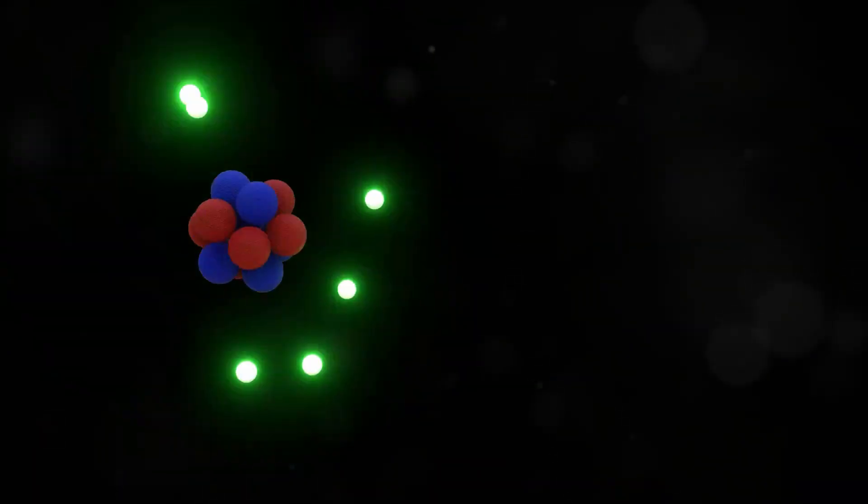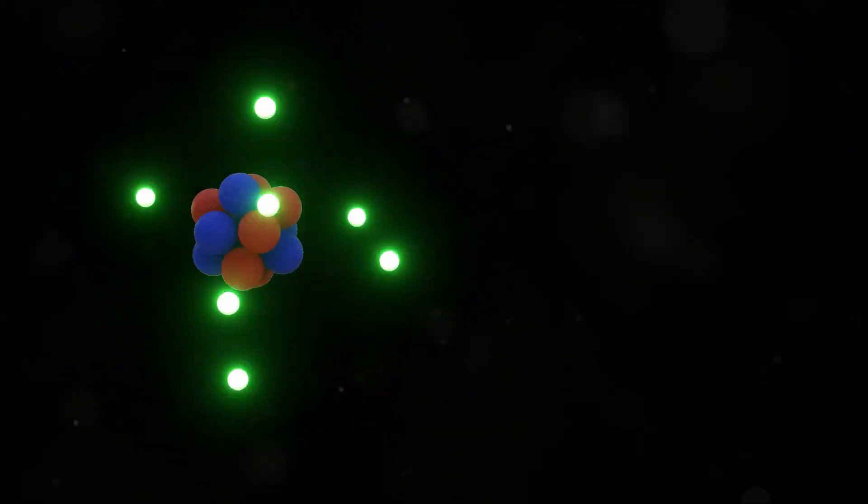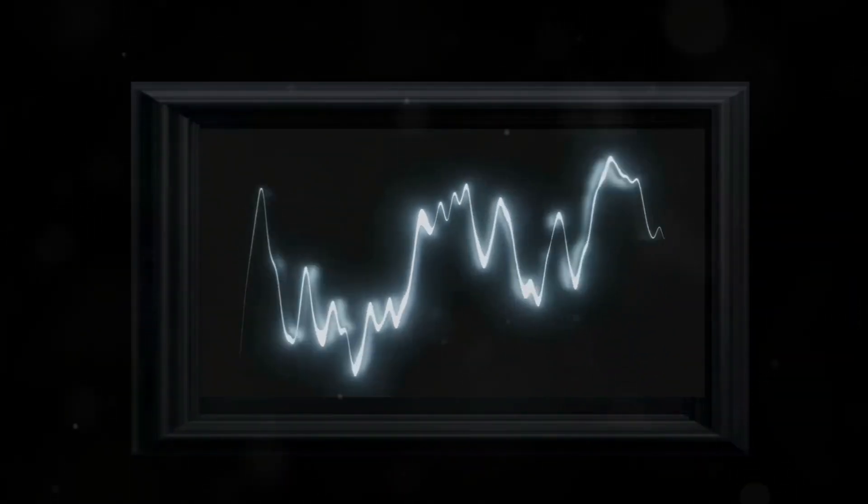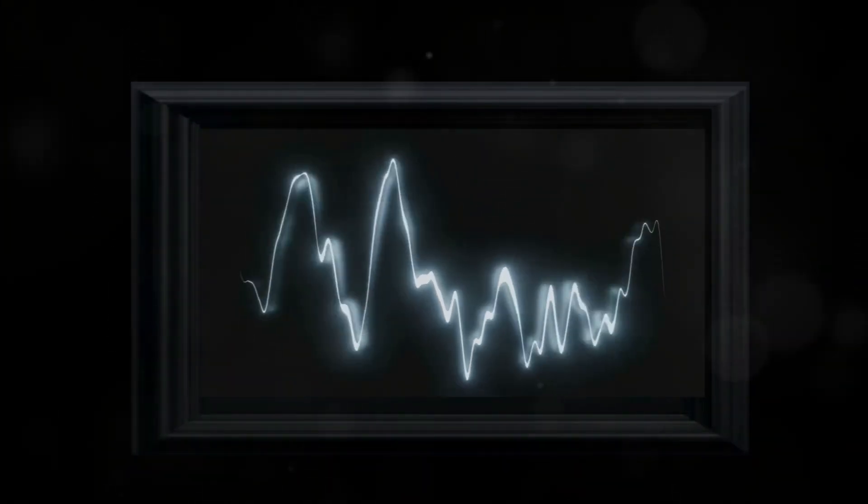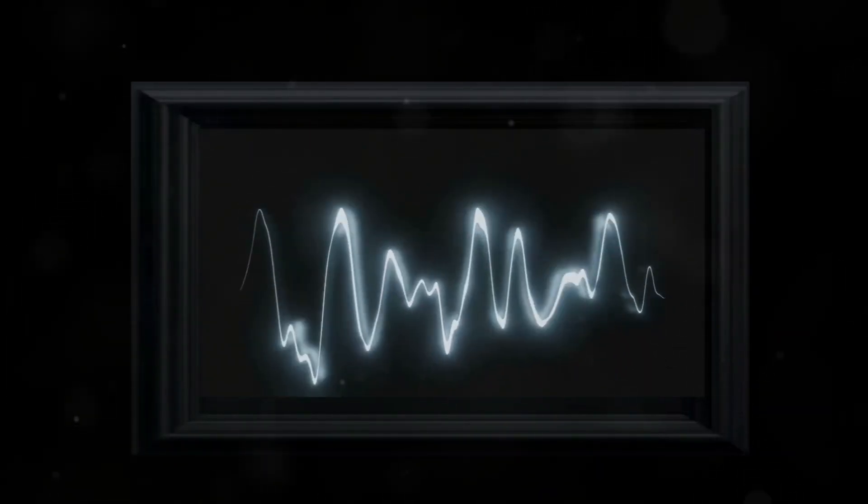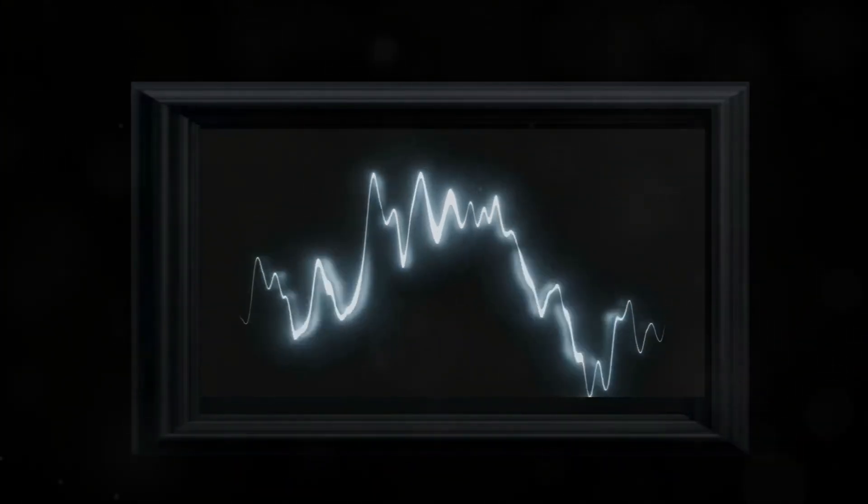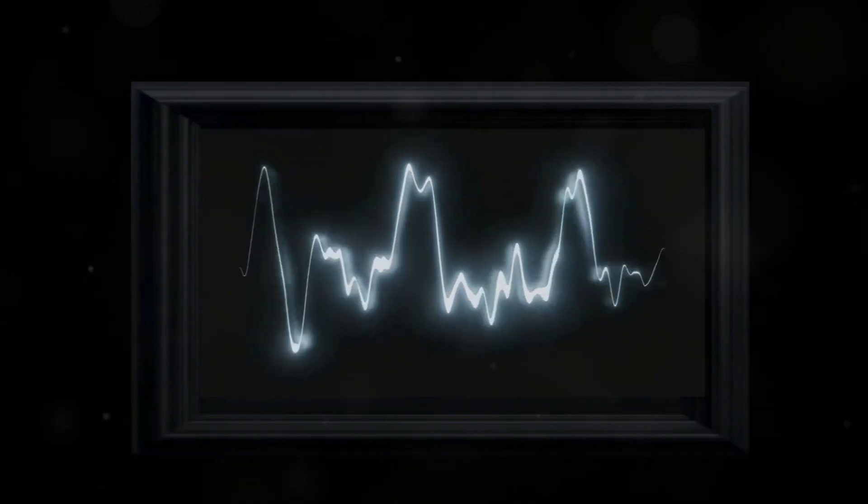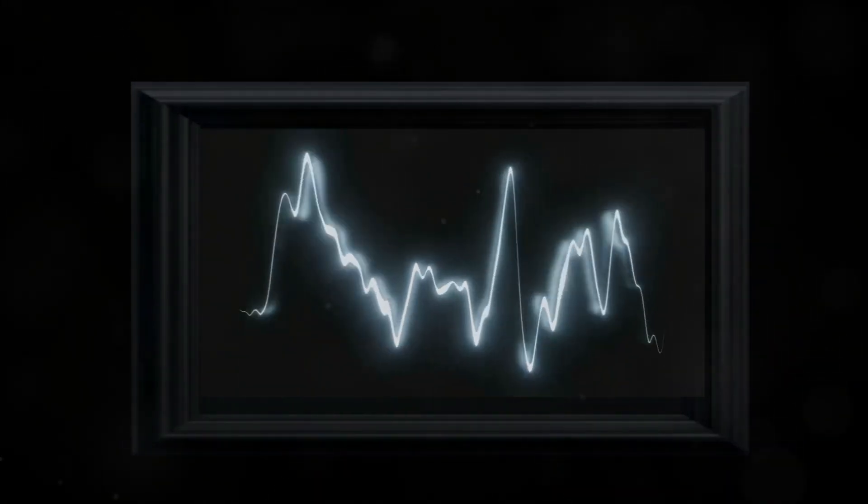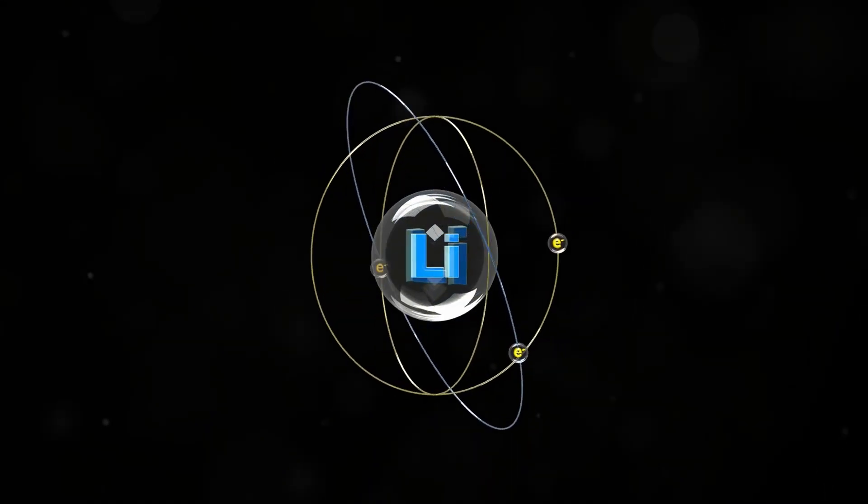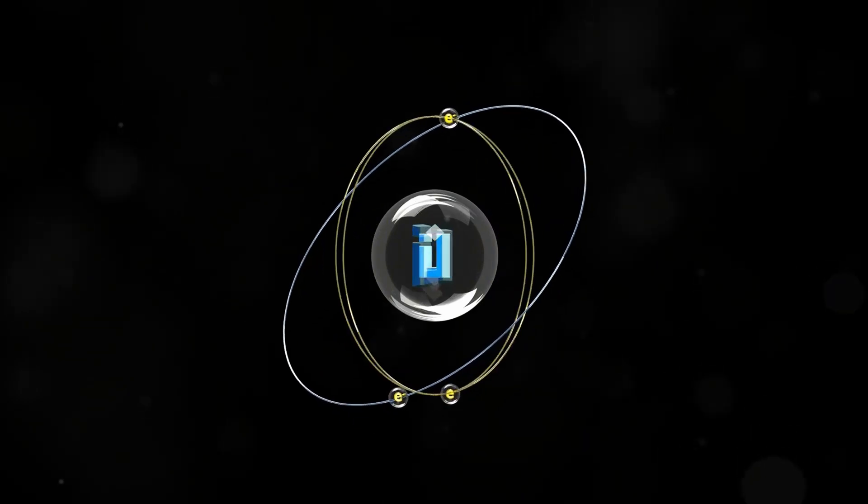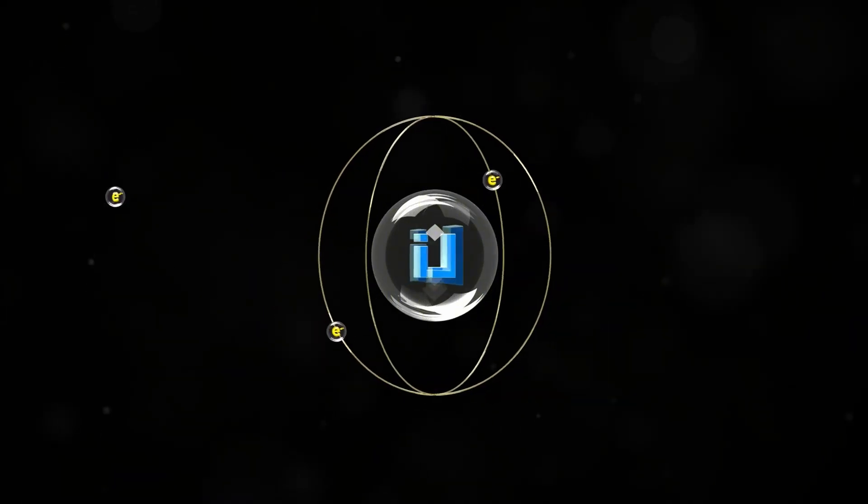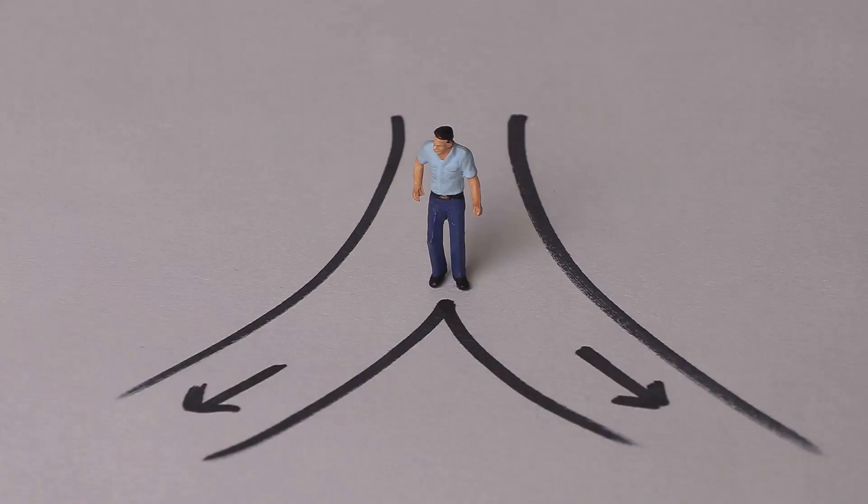For example, imagine a box containing an electron. You can't say with certainty where the electron is, but you can describe the probability of finding it in different places. Maybe a 30 percent chance in one spot and an 80 percent chance in another. But when you measure its position, you pick one of these possibilities, forcing the electron to exist in a specific spot.